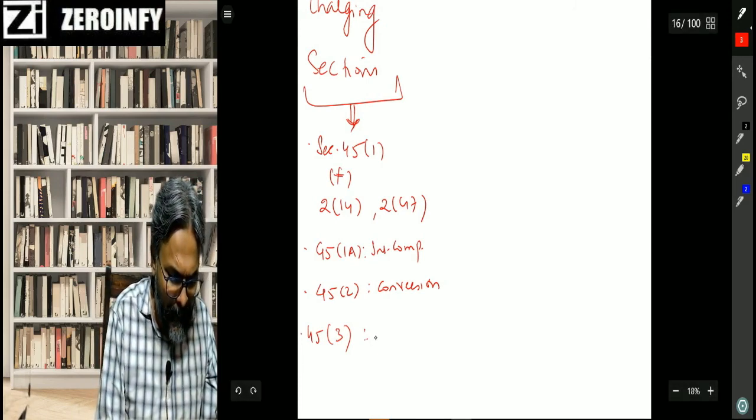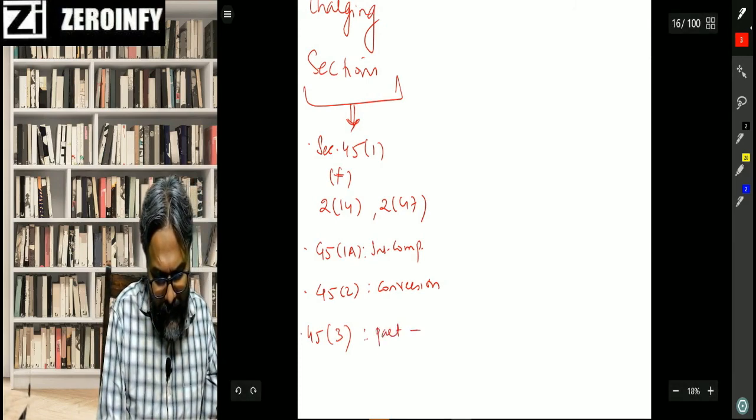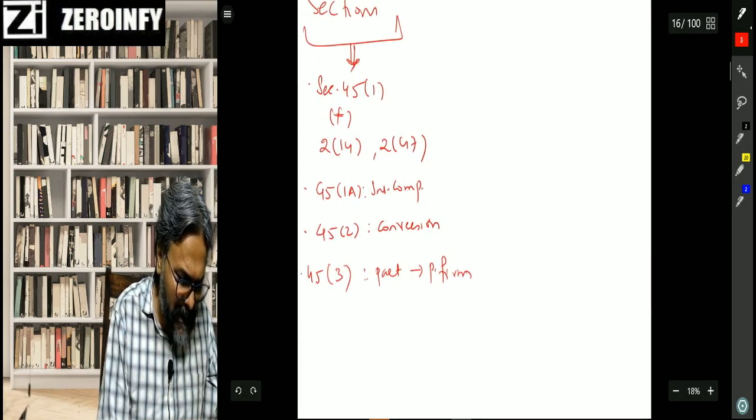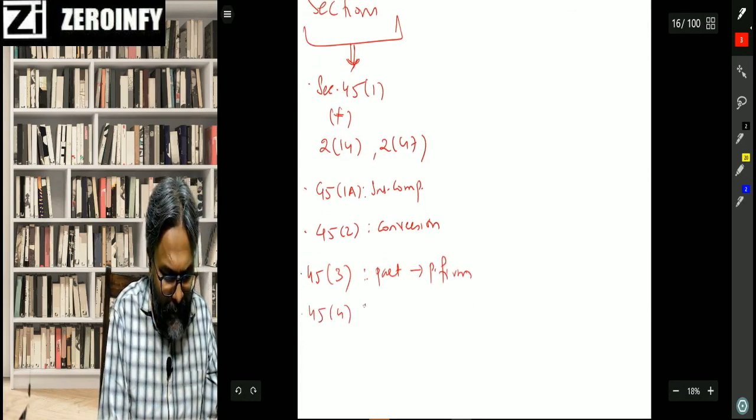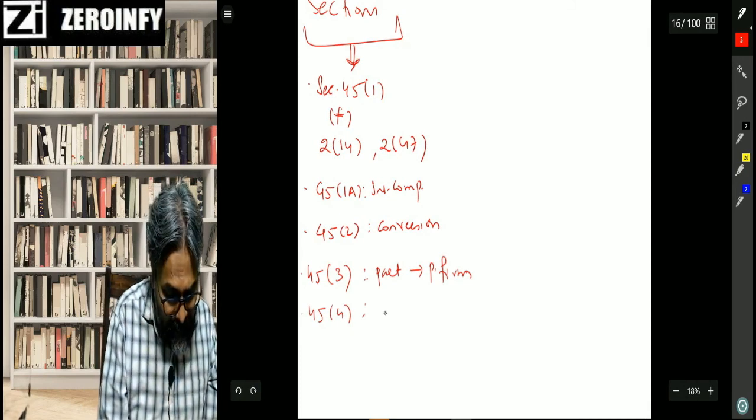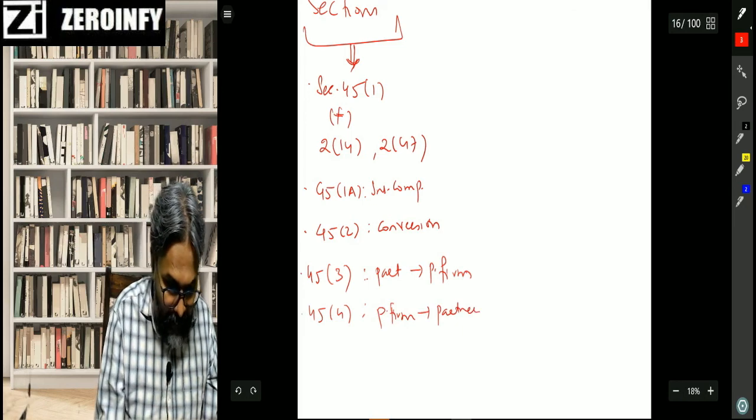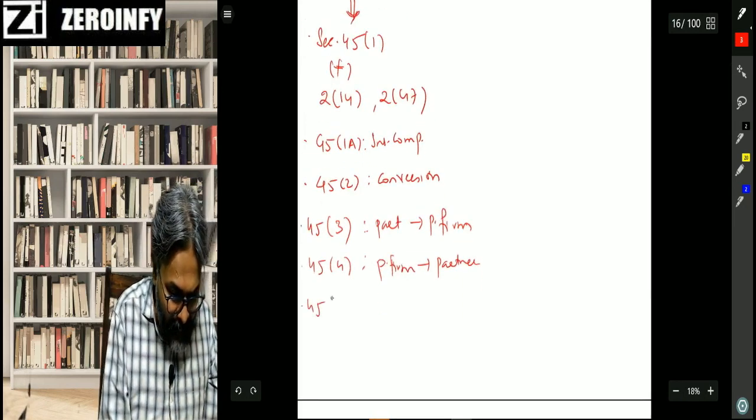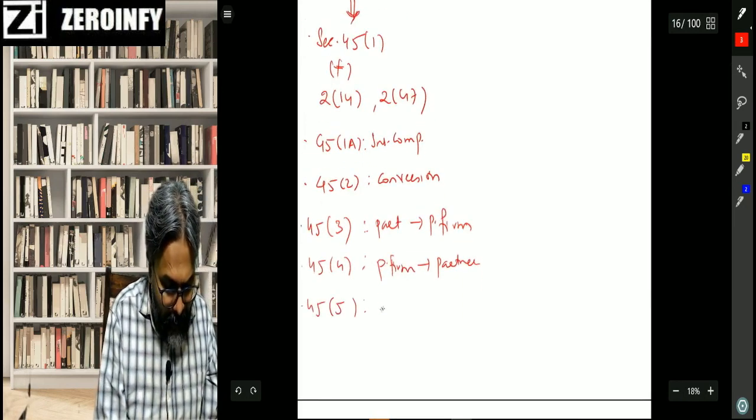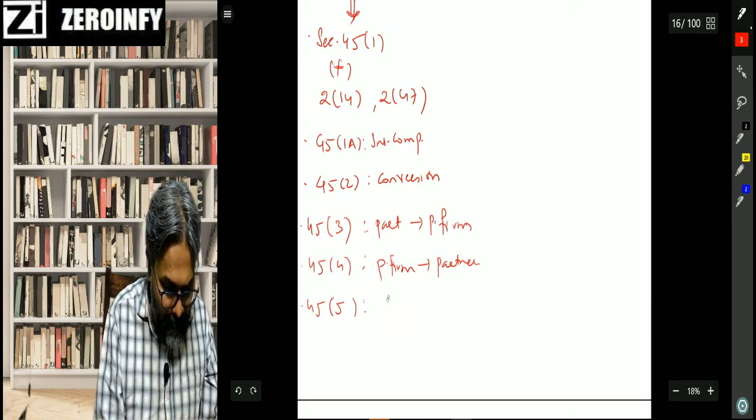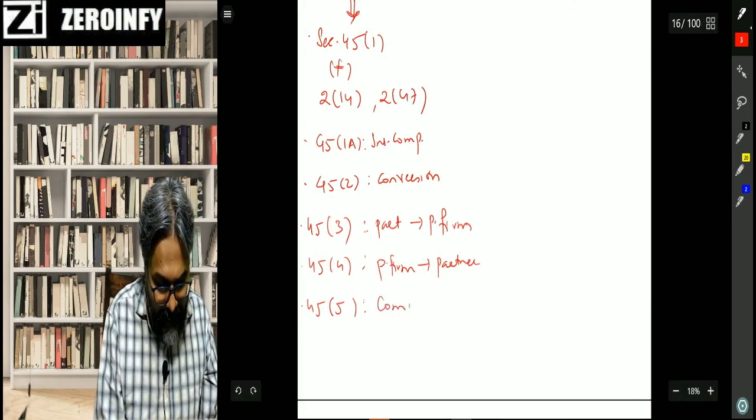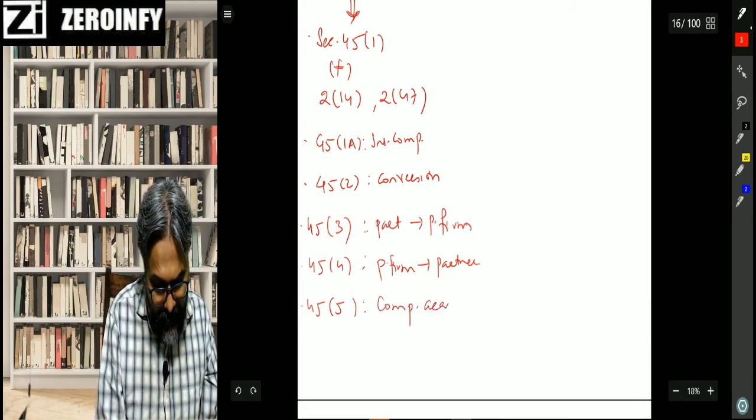So that is 45.2. Thereafter, this 45.3 and 45.4, hopefully you would have gone through this. In respect of the transfer made by the partner, the transfer of a capital asset made by the partner in the partnership firm. So this was from partner to partnership firm that the transfer is taking place. And thereafter 45.4, which is the reverse, means the transfer has taken place from partnership firm to the partner.